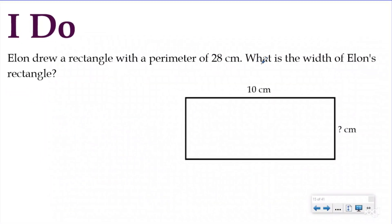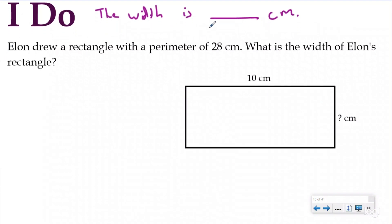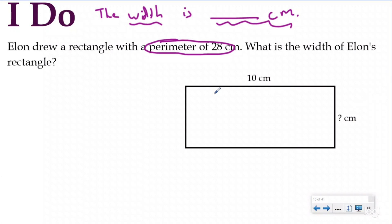Elin drew a rectangle with a perimeter of 28 centimeters. What is the width of Elin's rectangle? My statement is going to say: the width is blank centimeters. The perimeter is 28 centimeters, and they already gave you the picture — you're looking for the missing side. If one side of the rectangle is 10, then the attributes of a rectangle tell me the opposite side is also going to be 10. Whatever this side is, the opposite side will also be the same, and adding all sides should give me a perimeter of 28.